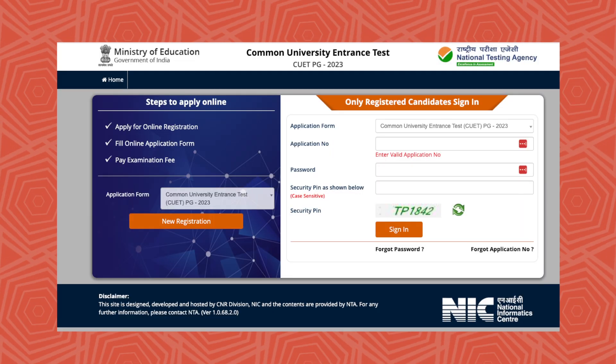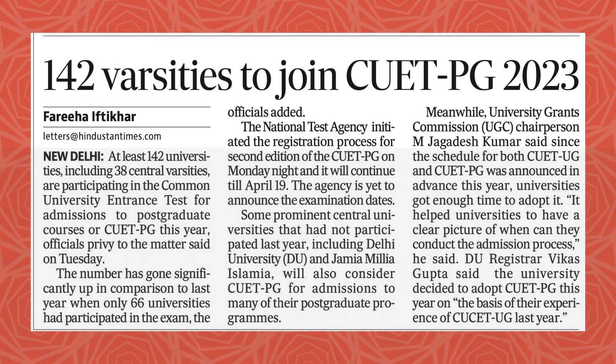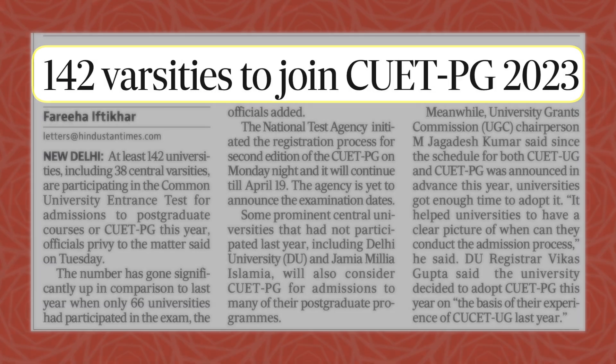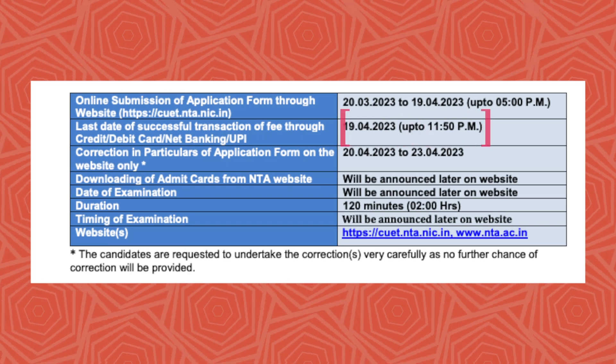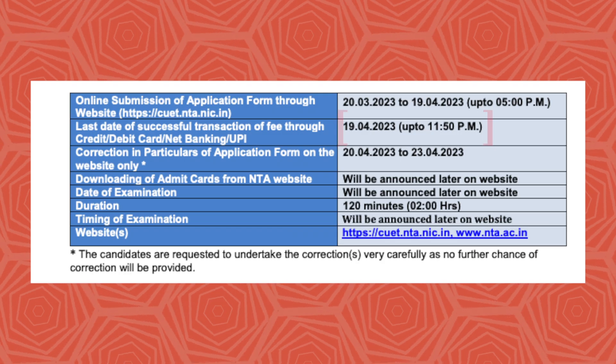I hope you know all these details. It is expected that you should at least know the marking scheme and number of questions if you are serious about cracking CUET PG in English literature. Application forms are available on the official website, and universities are enrolling students based on CUET score. The last day to fill the application form is 19th of April, so do not forget to register. Now let's talk about the important subjects.